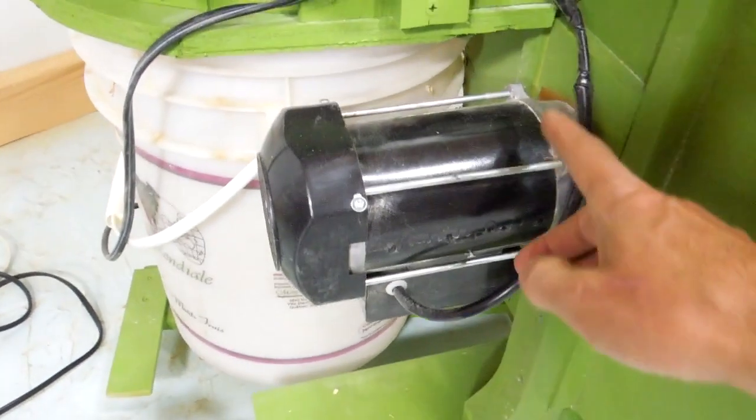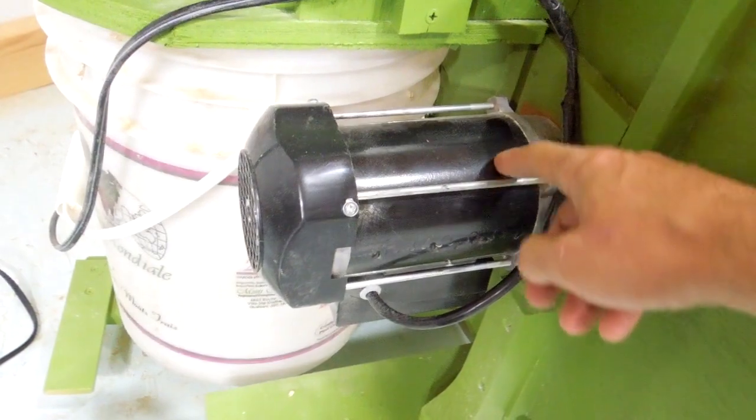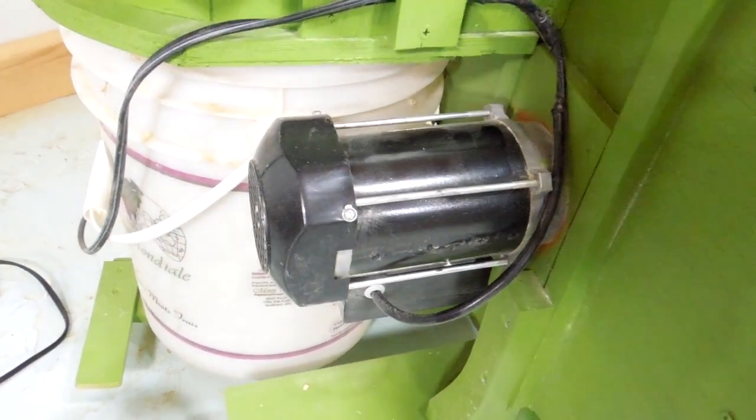So instead I used a 1/3 horsepower motor that came out of a tile saw that I got out of the garbage. New tile saws can be had for as low as $50. So these motors are not that expensive.